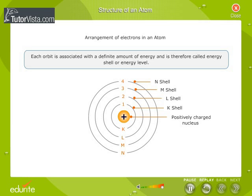Each orbit is associated with a definite amount of energy and is therefore called energy shell or energy level.